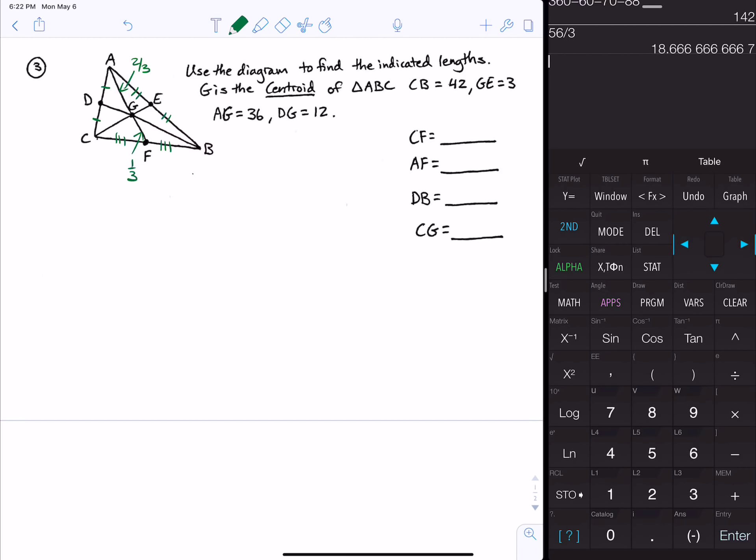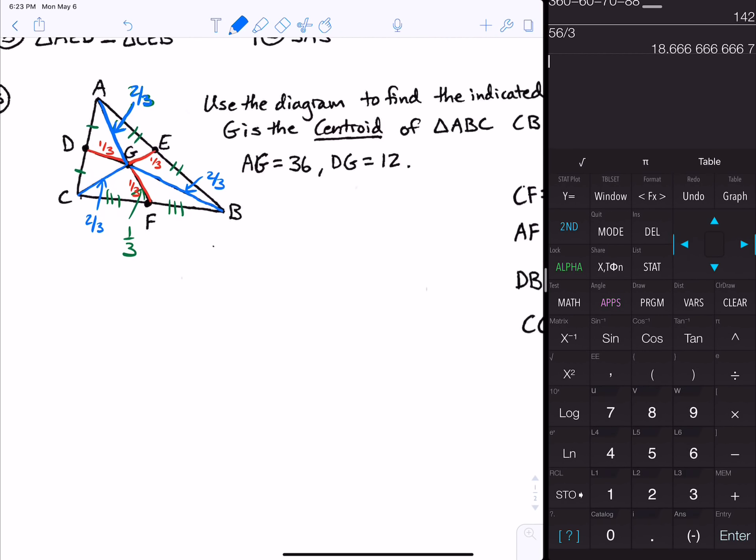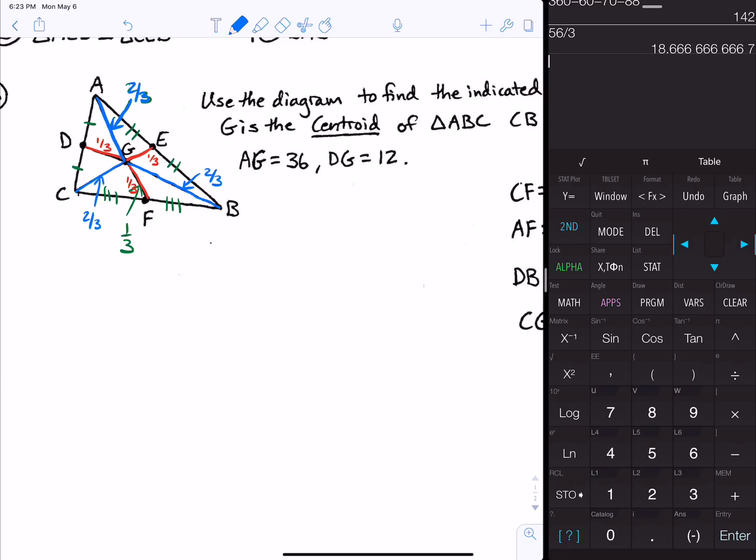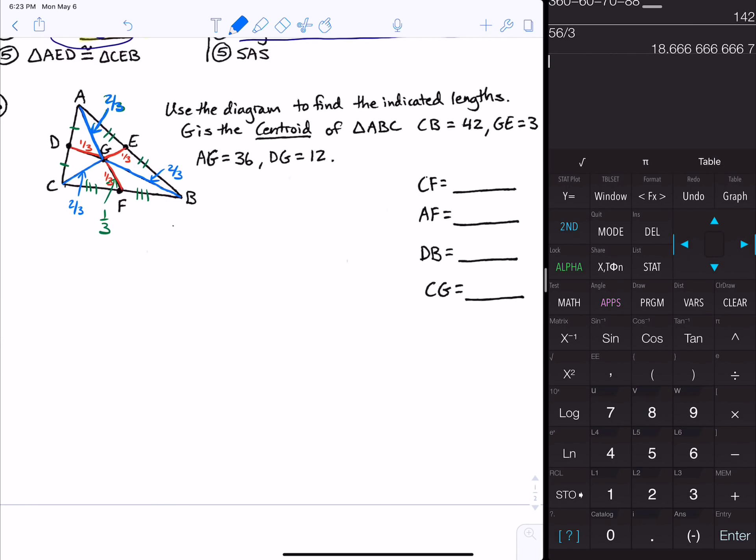From each midpoint to the centroid, that's the shorter part of the median and those are all one-third of the total median. The vertex to the centroid is the longer part of each median and that is two-thirds of the total. GB would also be two-thirds, and this one here would be two-thirds. Each side has a midpoint because the median is formed from the midpoint to the vertex of the opposite side. They told us CB is 42.